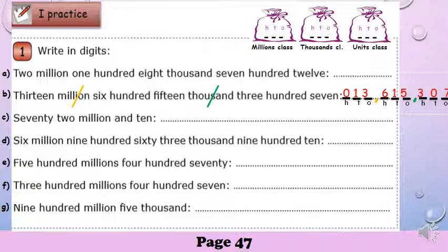In this number we have one zero to the left, so we can cross this zero. Now the next one: five hundred millions, four hundred seventy. The largest word is millions, so we have also three classes — nine digits, nine dashes. We separate each class by a comma.